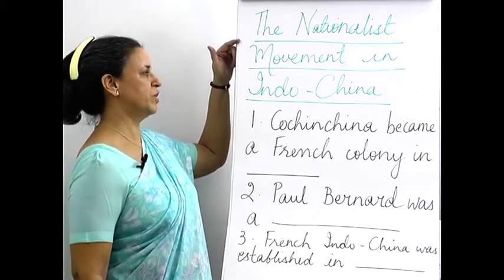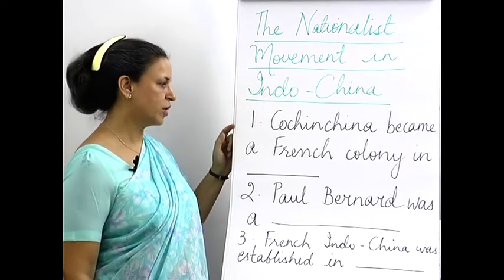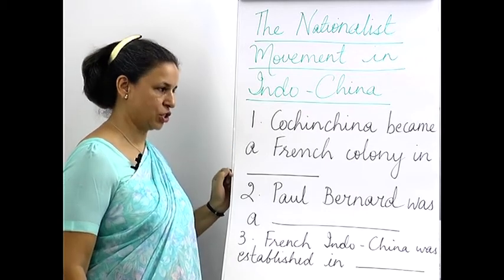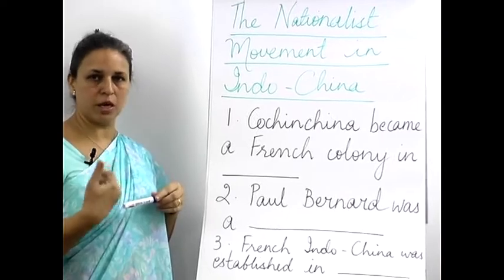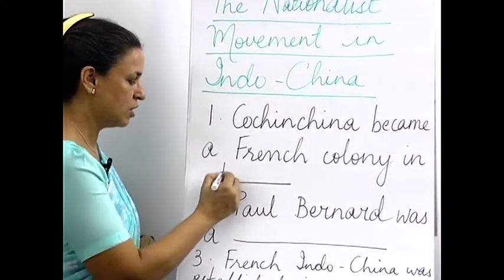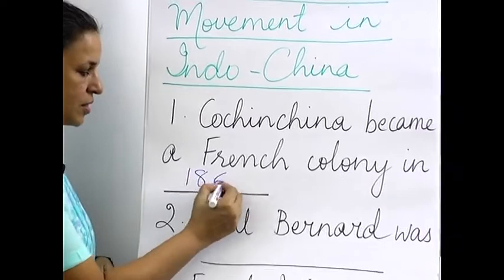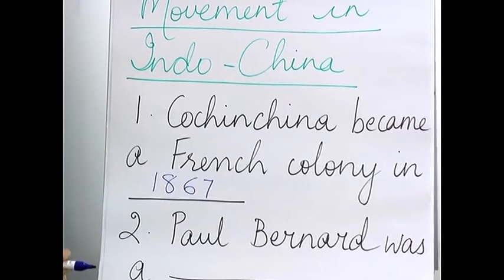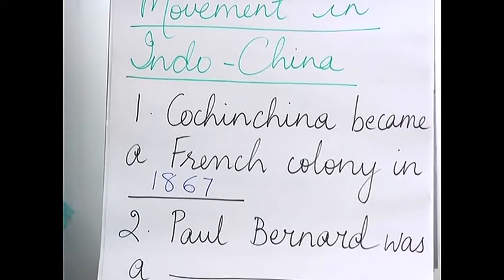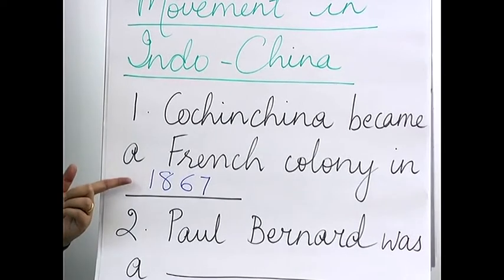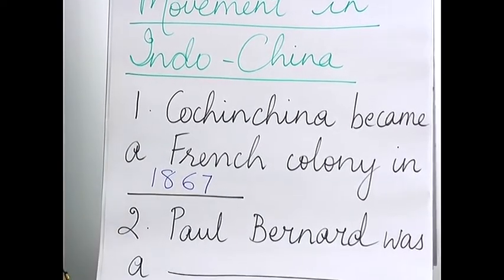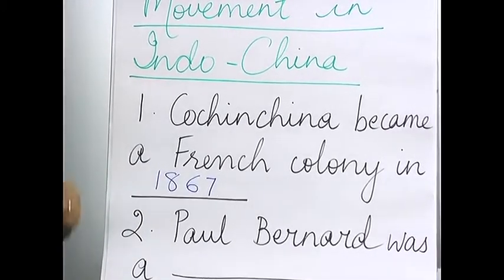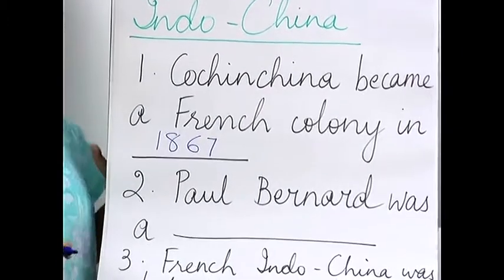The nationalist movement in Indochina. Let us look at the first one: Cochin China became a French colony — we have to write the year — that was in 1867. They can also ask in which year did Cochin China become a French colony, and you will write 1867. Or if they ask which French colony was established in 1867, you write Cochin China.